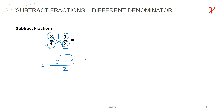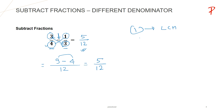So 9 minus 4 is 5, and at the denominator's place we have 12, so the result of this subtraction is 5 upon 12. We got the same result. In the first method we followed LCM, and in the second method we followed this cross-multiplication process.